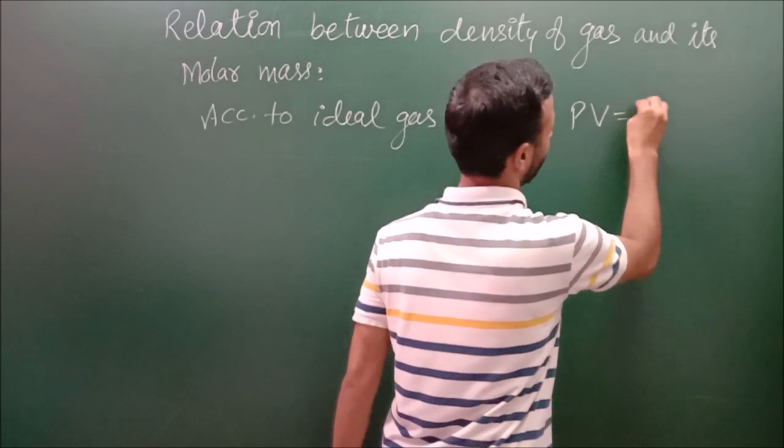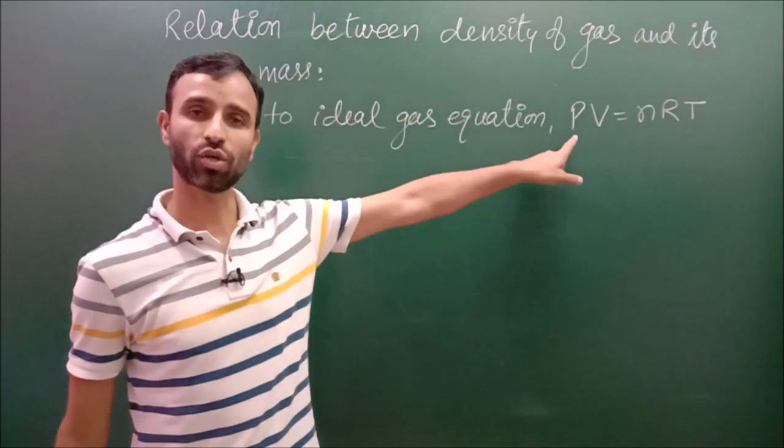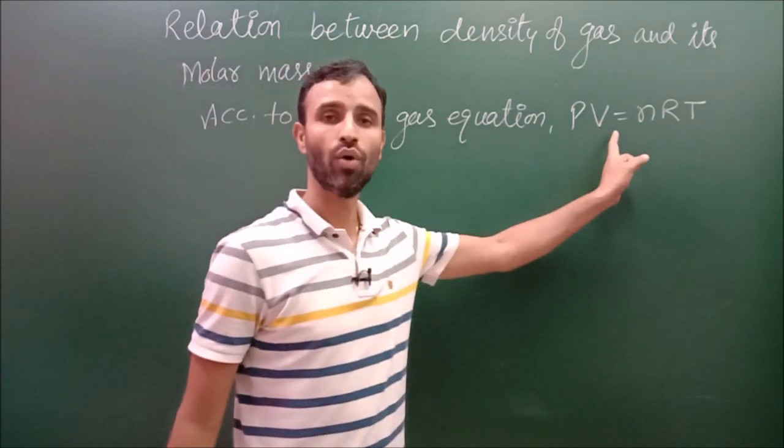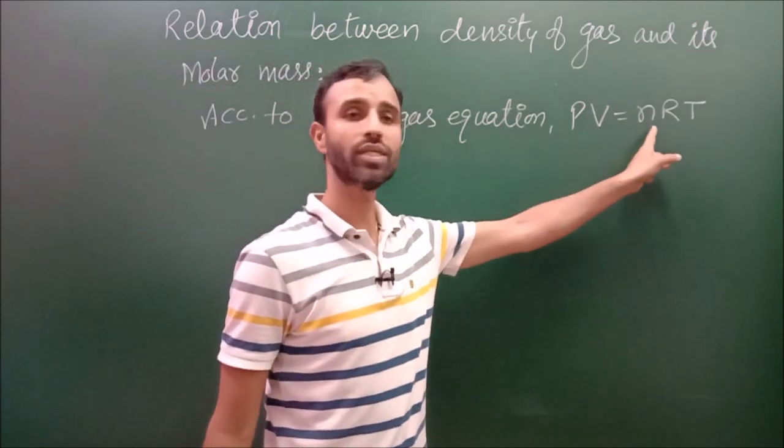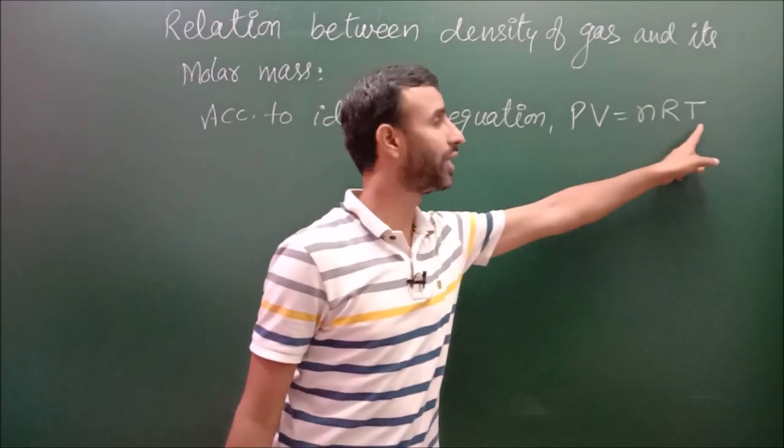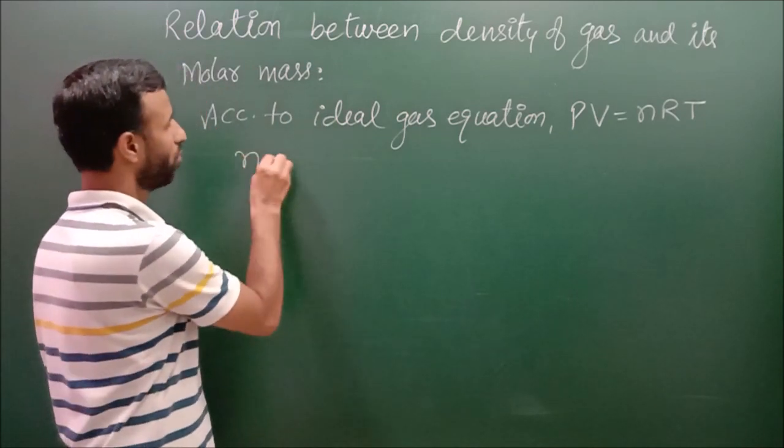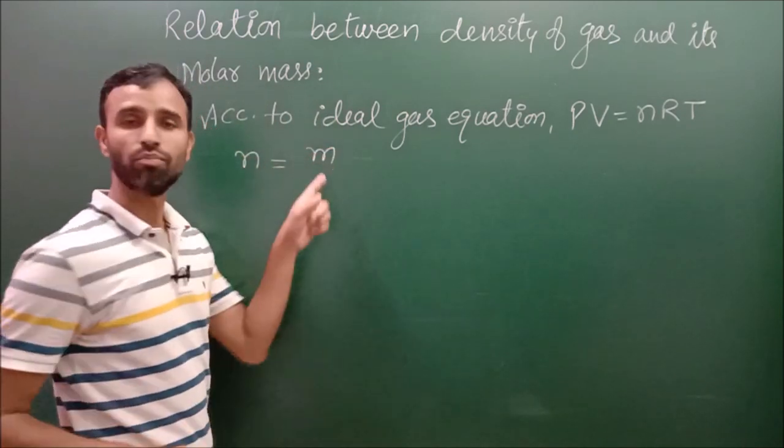P is pressure of the gas, V is the volume of the gas, N is number of moles, R is gas constant and T is temperature in Kelvin.